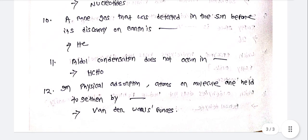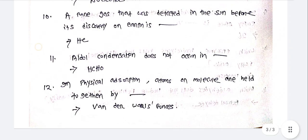A rare gas that was detected in the sun before it was discovered on Earth is Helium. Aldol condensation does not occur in HCHO.